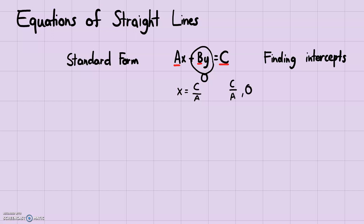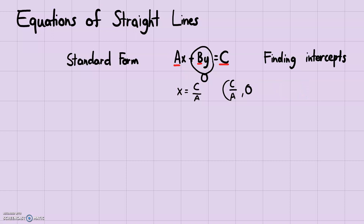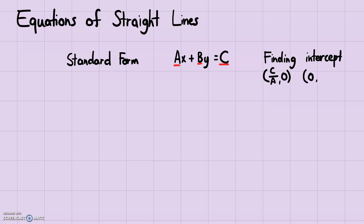That's the x-intercept. To find the y-intercept, you just set x equal to 0. So the x-intercept is (C/a, 0) and the y-intercept is (0, C/b). It's very easy to find the intercepts in this form.